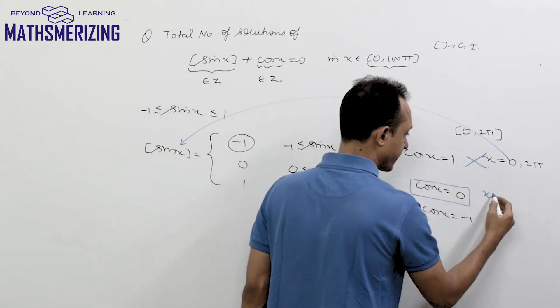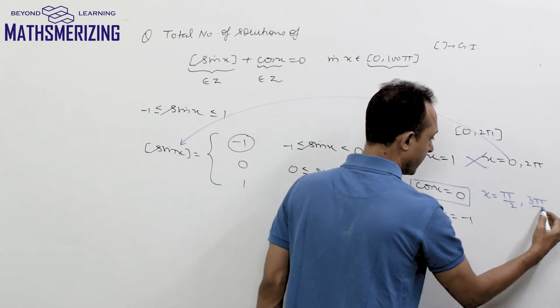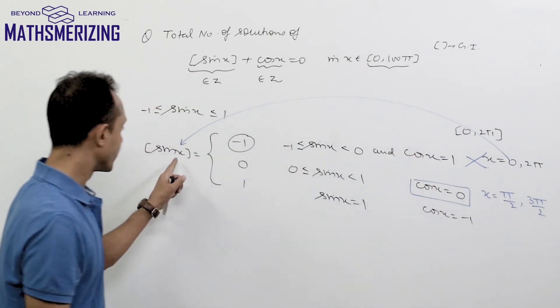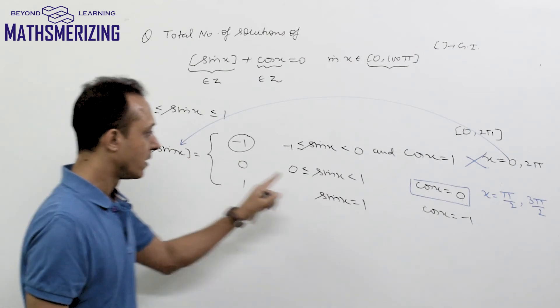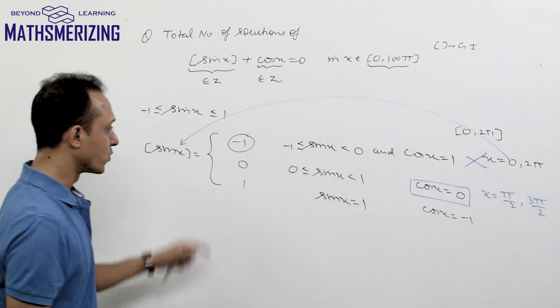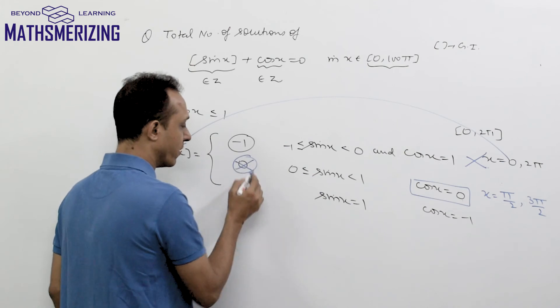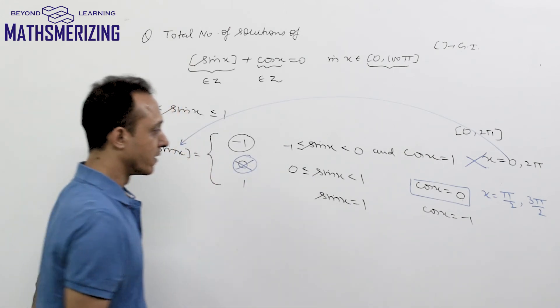Now cos x = 0 when x is π/2 or 3π/2. At π/2, sin x = 1, so [sin x] = 1. At 3π/2, sin x = -1, so [sin x] = -1. When cos x is 0, sin x cannot be 0.